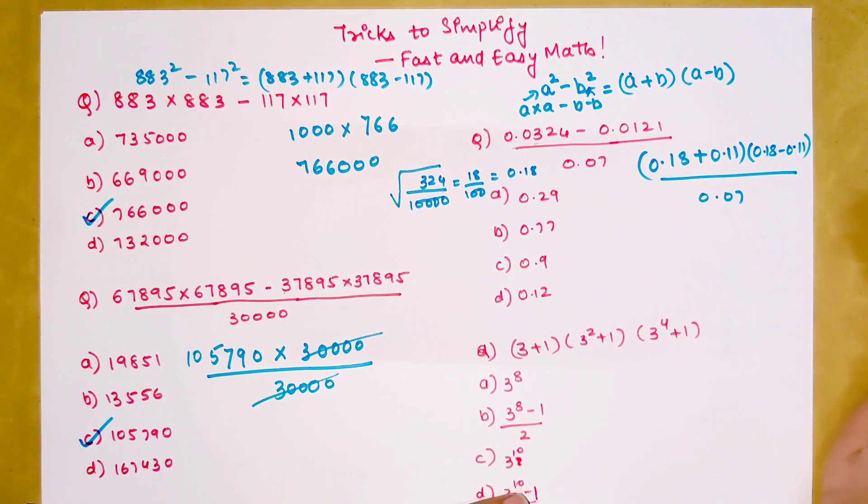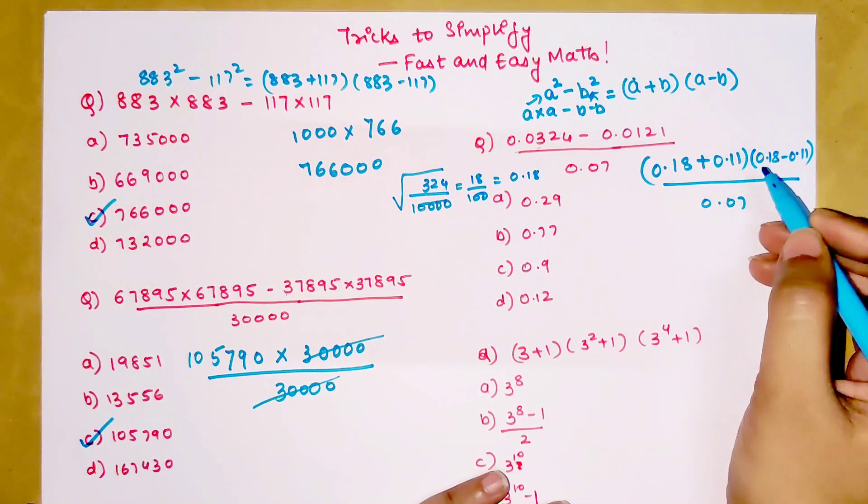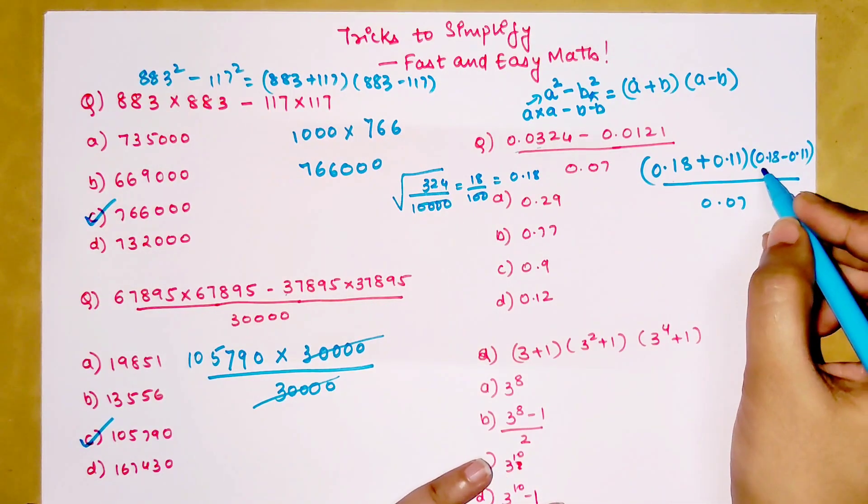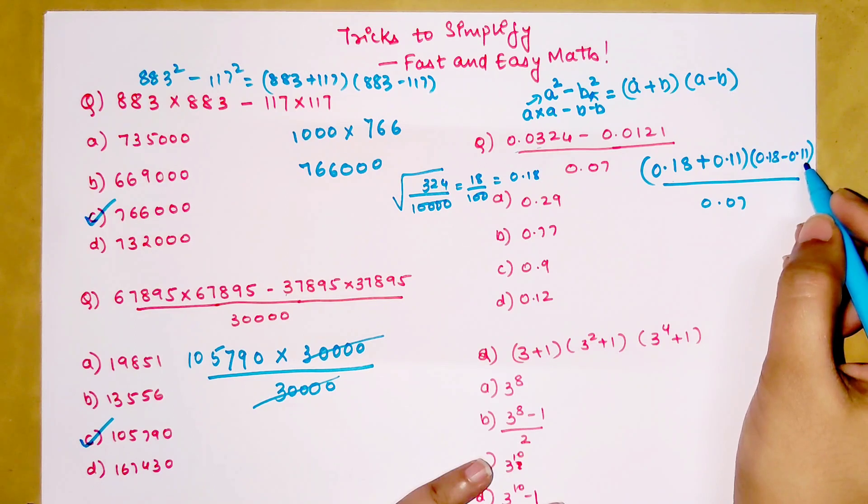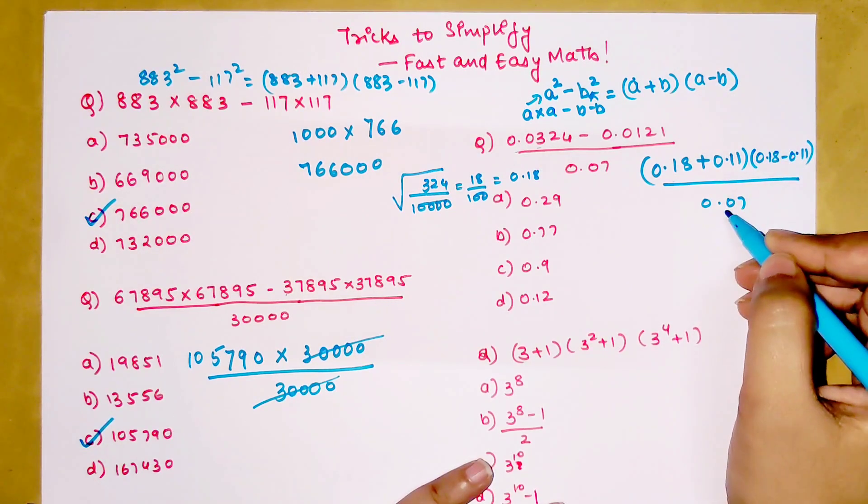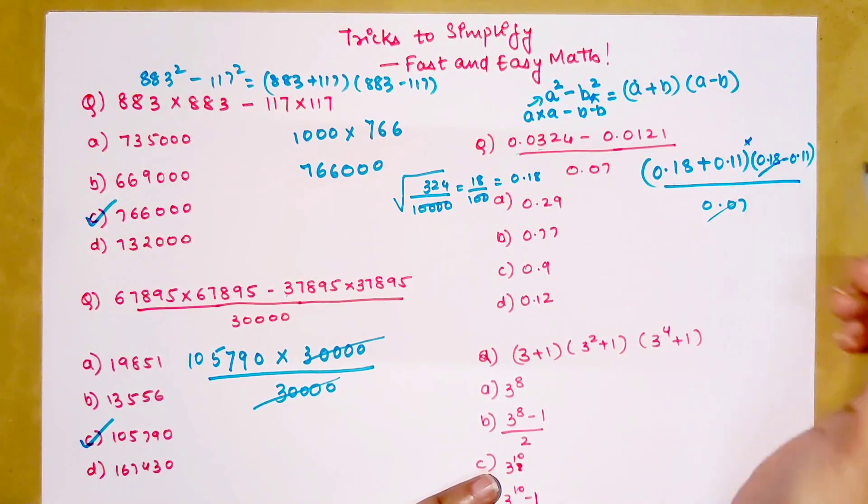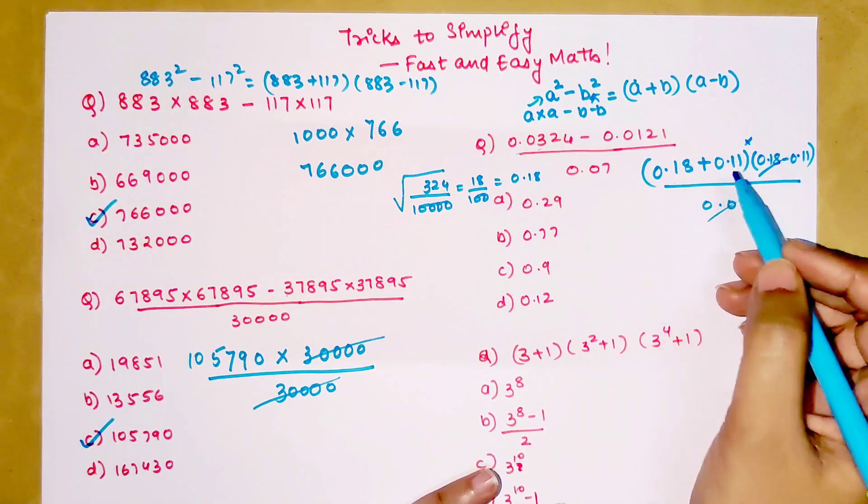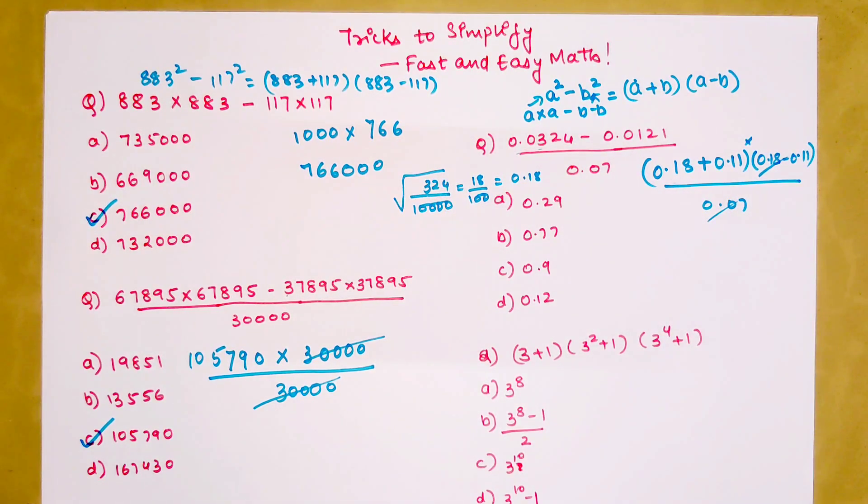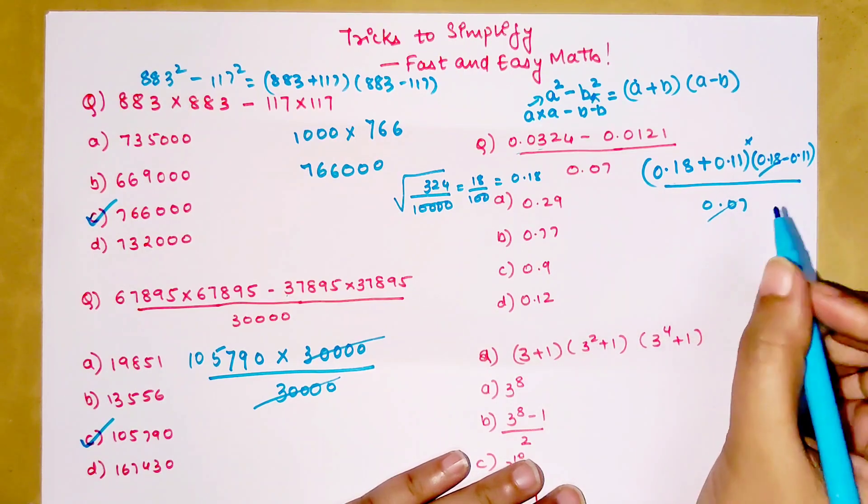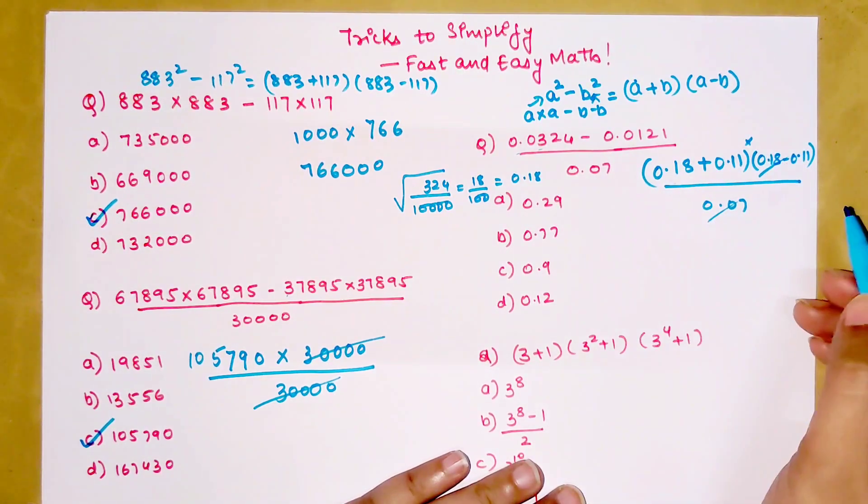In entrance exams you do not have that much time. When you subtract 0.11 from 0.18 you are getting 0.07, so this is just getting cancelled. I can cancel this because there is a multiplication sign between the brackets. Had there been a plus sign or a minus sign, then I could never cancel the numerator and the denominator. You can only cancel if the entire numerator is getting multiplied by something which is getting cancelled in the denominator.